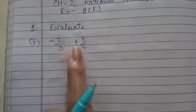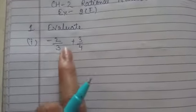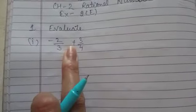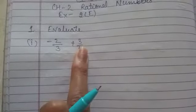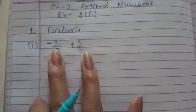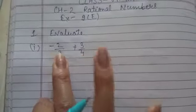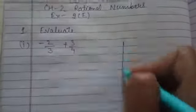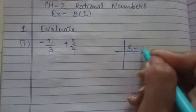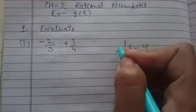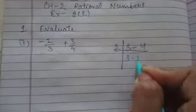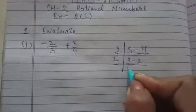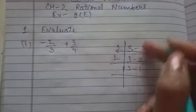First part, minus 2 over 3 plus 3 over 4. Wherever plus or minus sign is given between the two rational numbers, it means we solve that question by taking the LCM. We will take LCM of 3 and 4. Hope you all know how to take LCM.